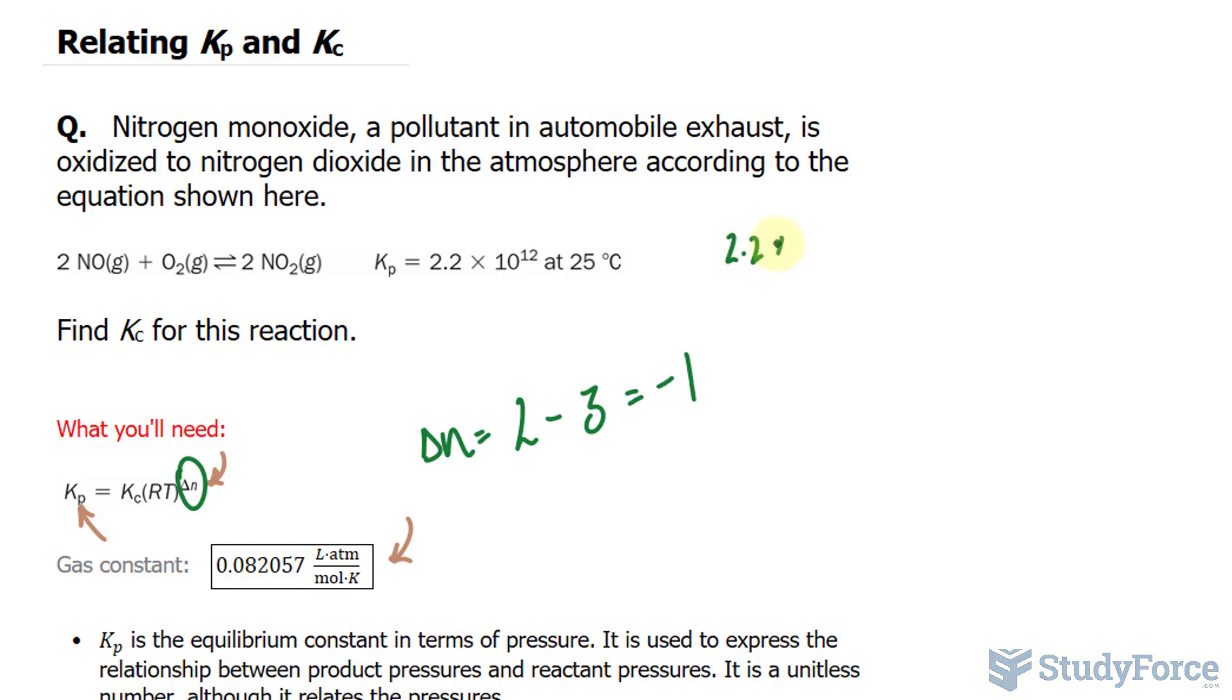So I'll write down 2.2 times 10 to the power of 12. That's for the left side of this equation, is equal to what we're looking for, times our gas constant, 0.082057. And let's write down all the units. So we have liters times atmosphere per mole times Kelvin. The temperature, T, is 25 plus 273. That's the conversion. And that gives us 298.